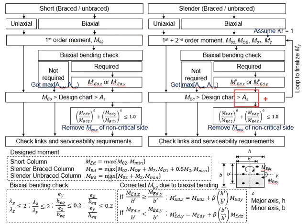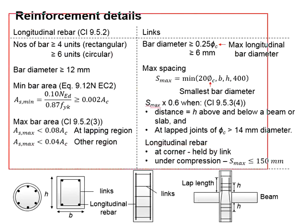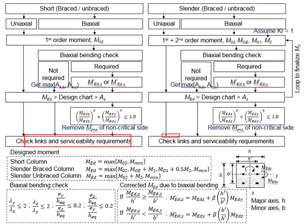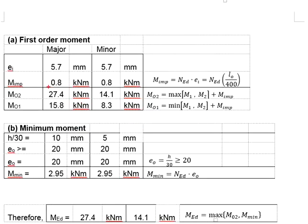Having the A_s determined, you will proceed with checking the link and the serviceability requirements. This process is the same for both short and slender columns. Now, having understood the uniaxial loading columns, we will look into the column subjected to moment in both axes. First, we deal with the short column. This time, we will have moment in both axes. First, you will need to start with determining the first order moment. Since you have moment acting in both axes, when calculating the M02, you will need to get the individual M02 for the major and the minor axis.